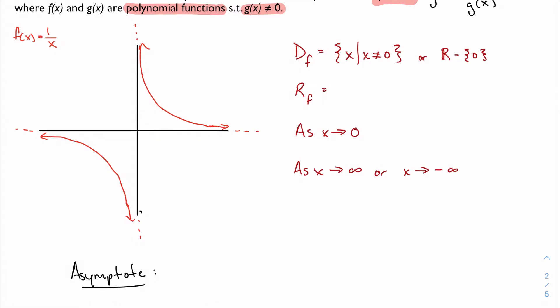Let's do the same thing with our range. If I look at my graph, I see values for the function on all y's except for the y-axis itself. My graph gets closer and closer to y equals 0 but never actually crosses or touches y equals 0. So my range is actually the same thing: all my y's except for 0.